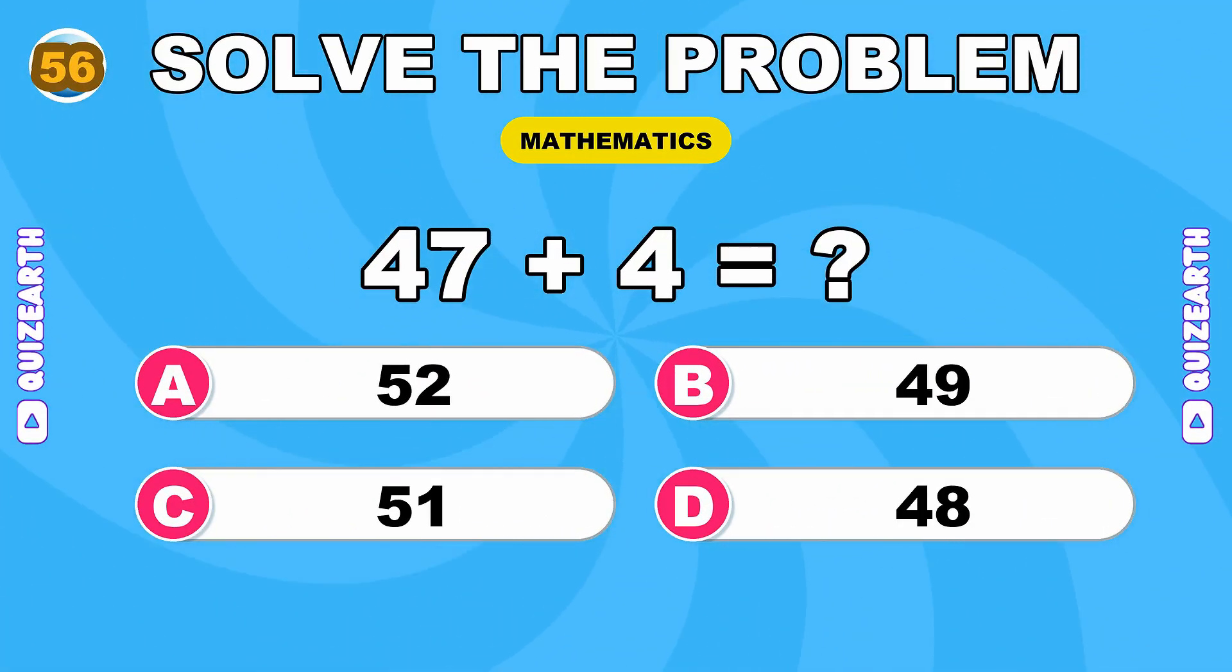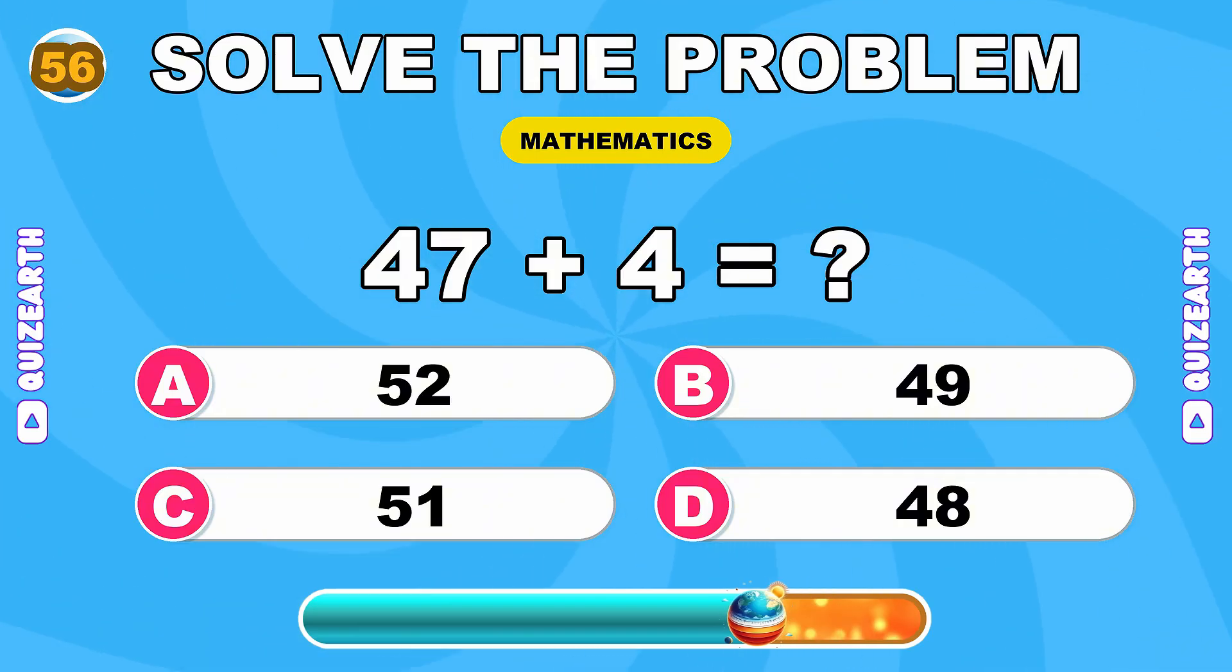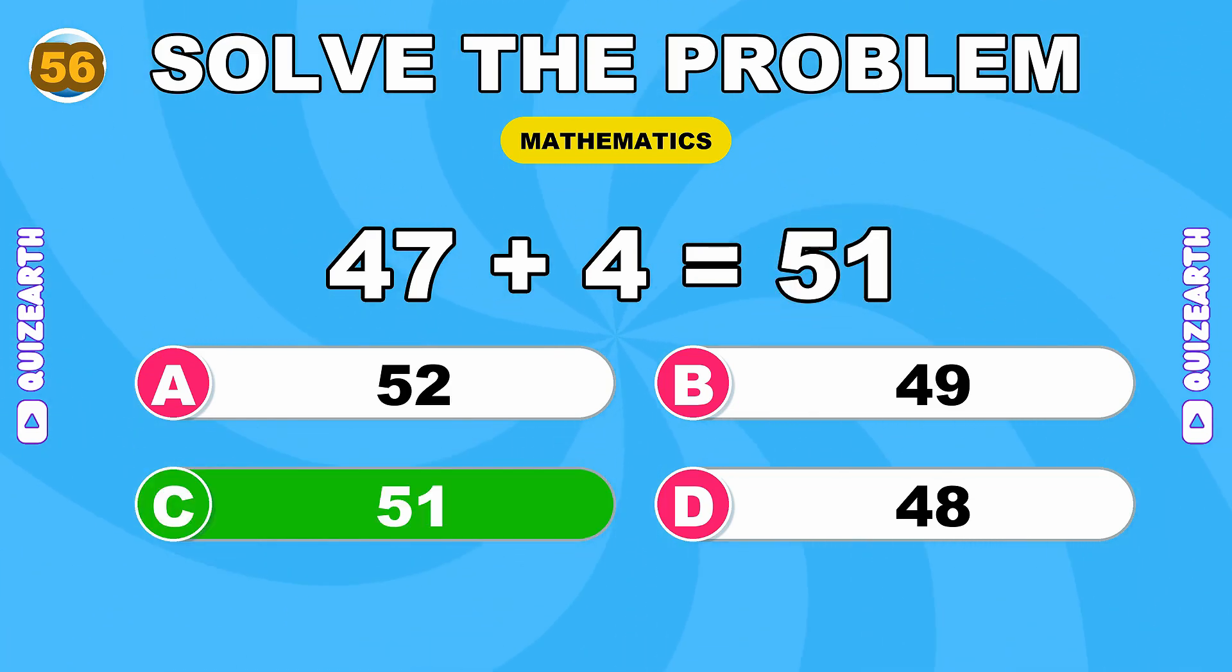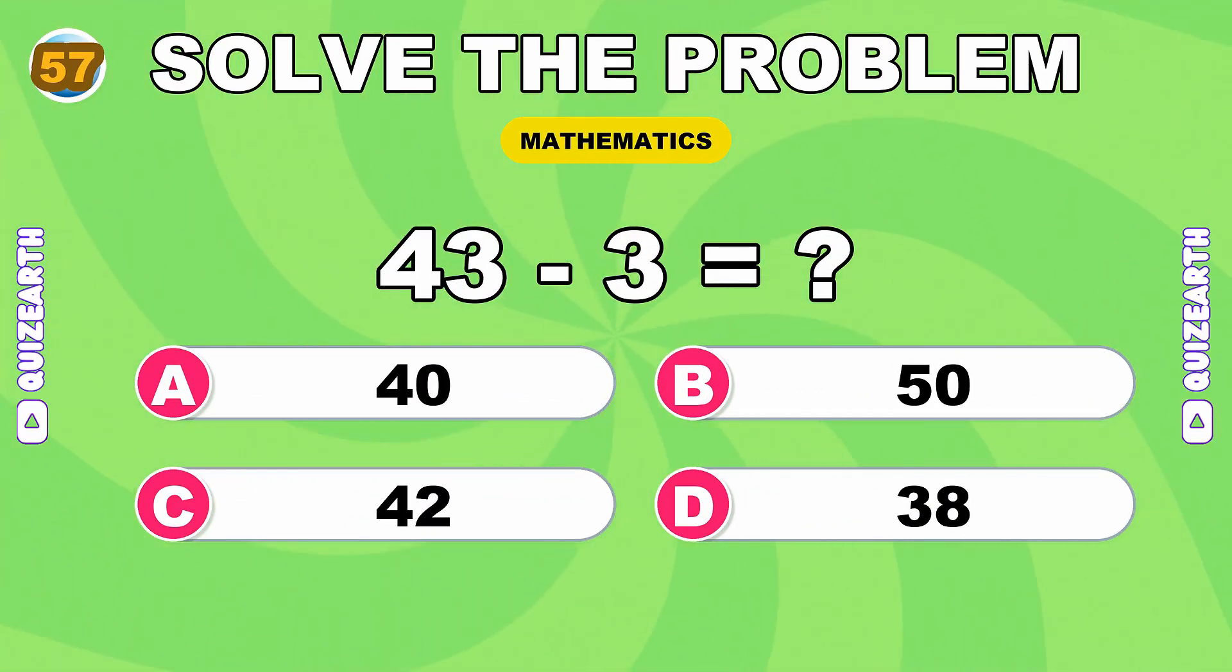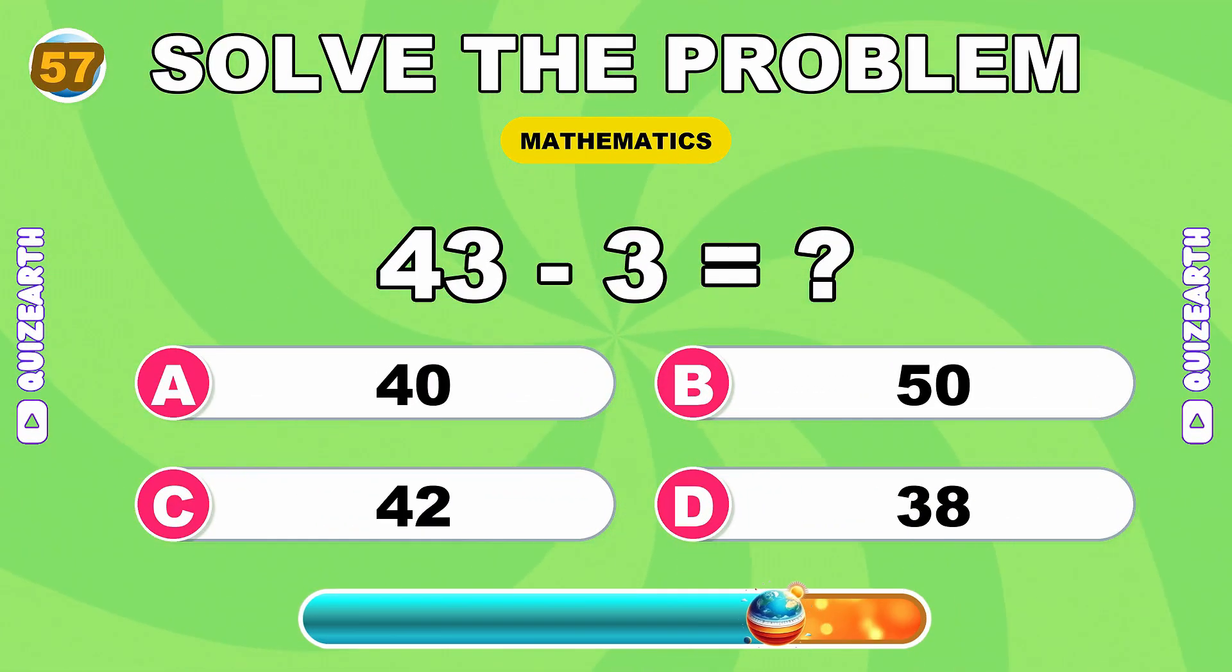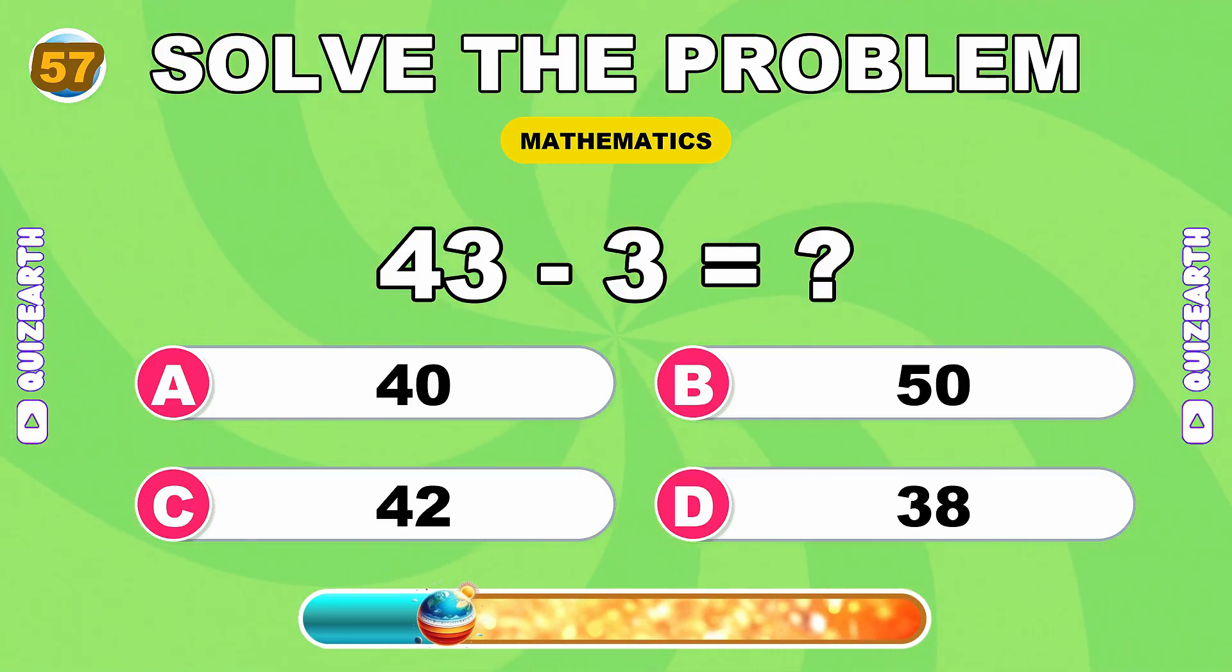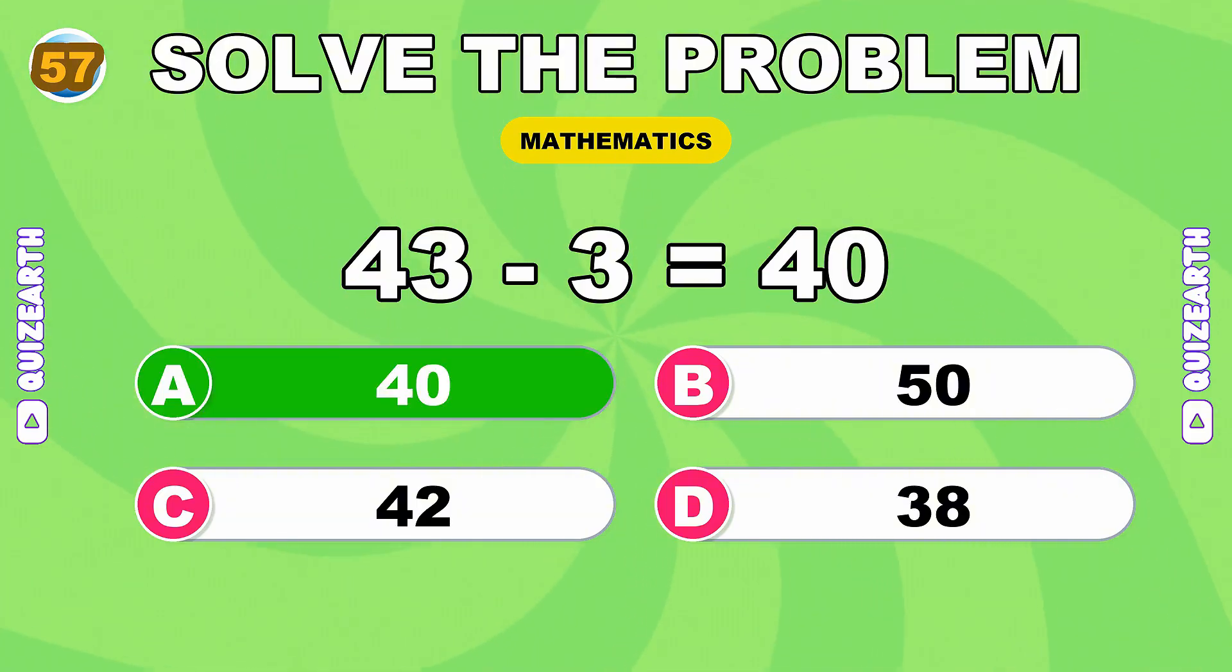How much is 47 plus 4? Incredible stamina, 51. What do you get when you subtract 3 from 43? Never slowing, 40.